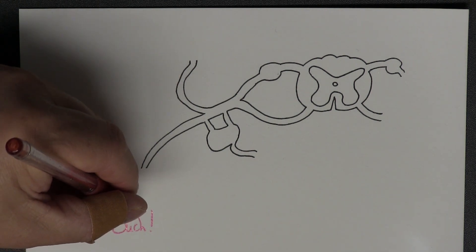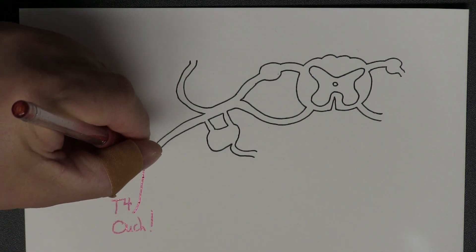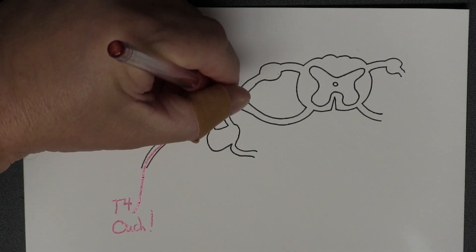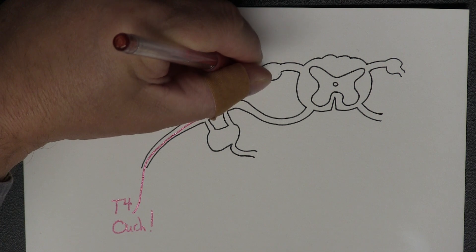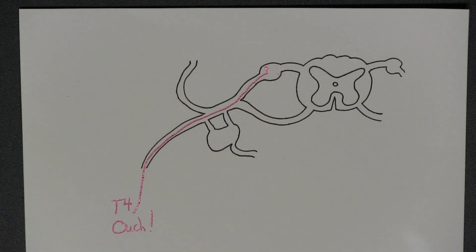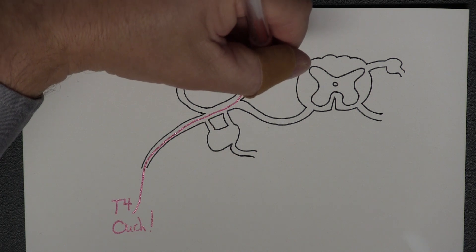Those sensory axons that are conveying that painful sensation are coming back along the anterior ramus, going on to the posterior root, and because they're sensory they're going to have their pseudo-unipolar cell bodies in the posterior or dorsal root ganglion.